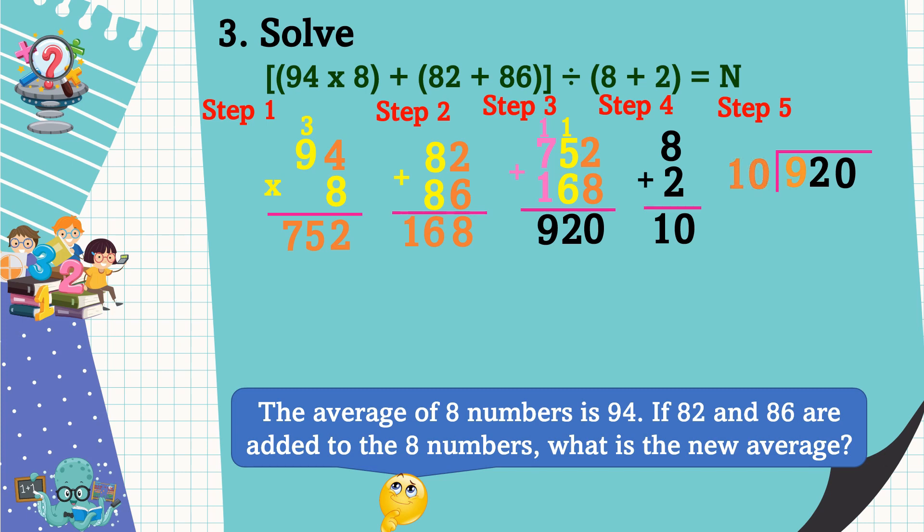9 divided by 10 cannot be, so we take 2 digits. 92 divided by 10 is equal to 9. 9 times 10 is equal to 90. 92 minus 90 is equal to 2. Bring down 0. 20 divided by 10 is equal to 2. 2 times 10 is equal to 20. 20 minus 20 is equal to 0. The new average is 92.